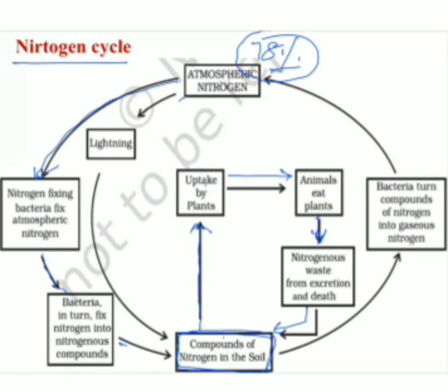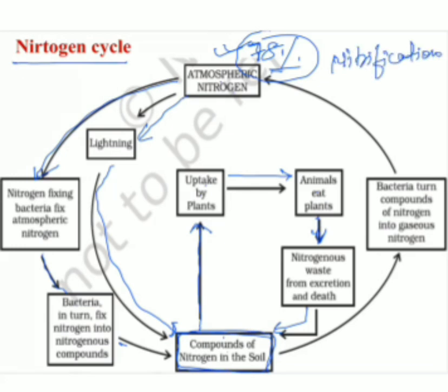A second route is when lightning occurs — it converts atmospheric nitrogen into compounds, which are again taken up by plants. The process by which atmospheric nitrogen is converted into nitrates and ammonia is called nitrification.